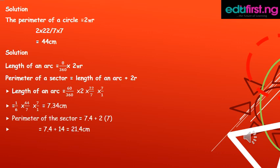Length of an arc equals θ/360 × 2πr. Perimeter of a sector equals length of an arc plus 2r.